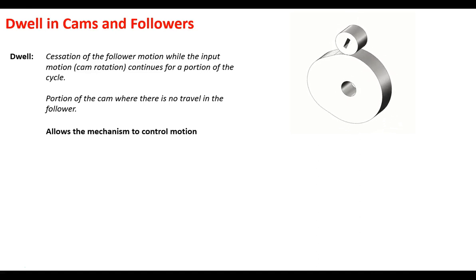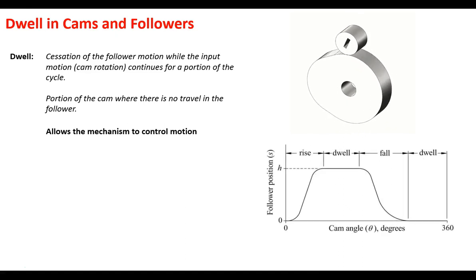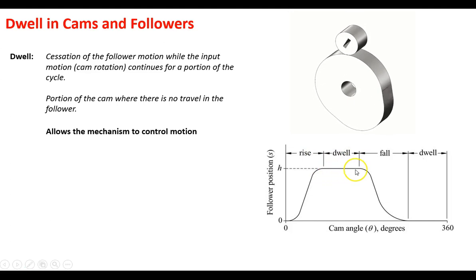This is what allows you to control the motion to be very specific. This diagram shows the displacement of the follower — how much it's rising, in this case to a height of h — going through a rise motion, then through a dwell where it stays at height h, then it falls, and another dwell where it stays put. You can calculate or describe this motion through how much the cam has rotated, from zero degrees all the way to its full rotation of 360 degrees.